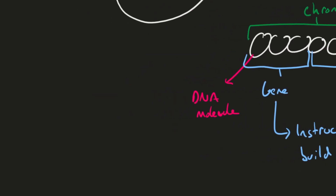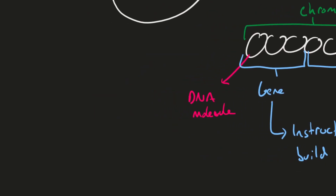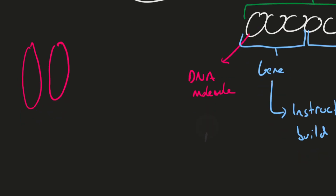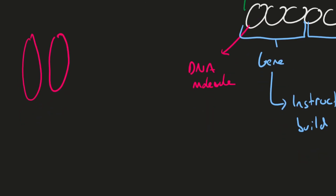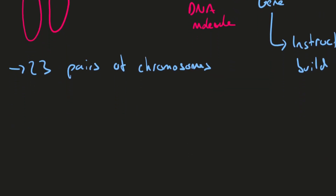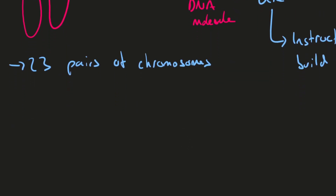We tend to have our chromosomes in pairs, so you might have a chromosome like this and a pair here like this. In humans particularly, we say we have 23 pairs of chromosomes, and the reason we refer to chromosomes in pairs is essentially where they actually come from.